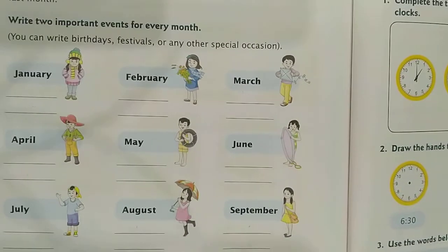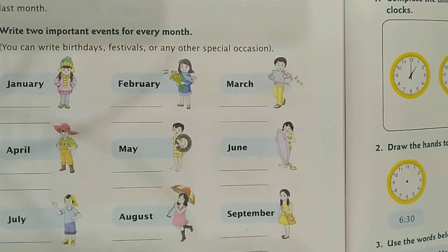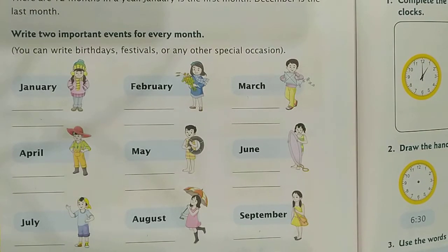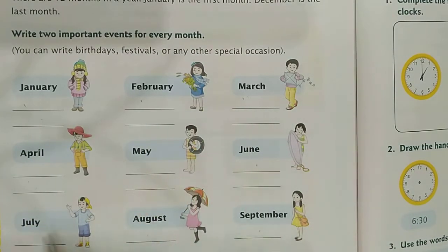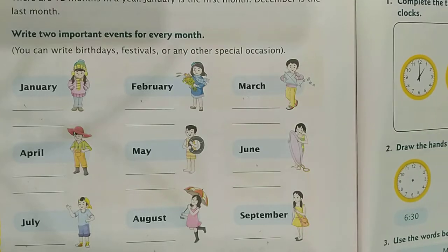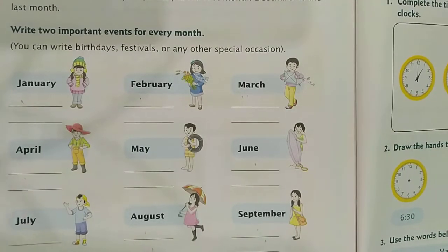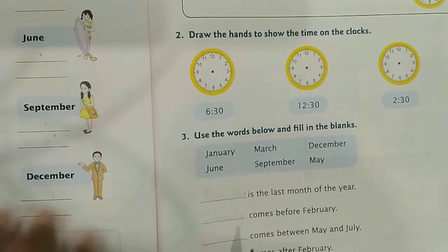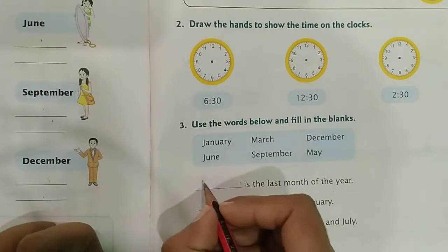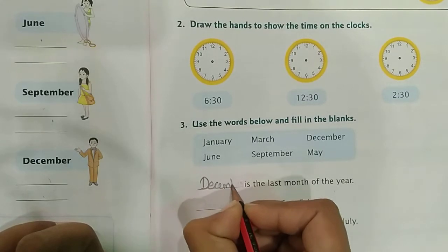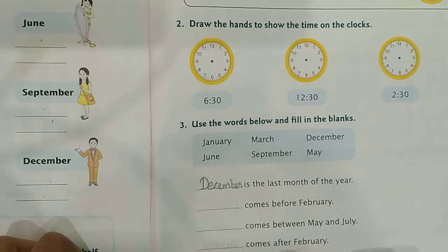Next is months of the year. Students, there are 12 months in a year. January is the 1st month and December is the last month: January, February, March, April, May, June, July, August, September, October, November, December. These are all the months of the year. December is the last month of the year.